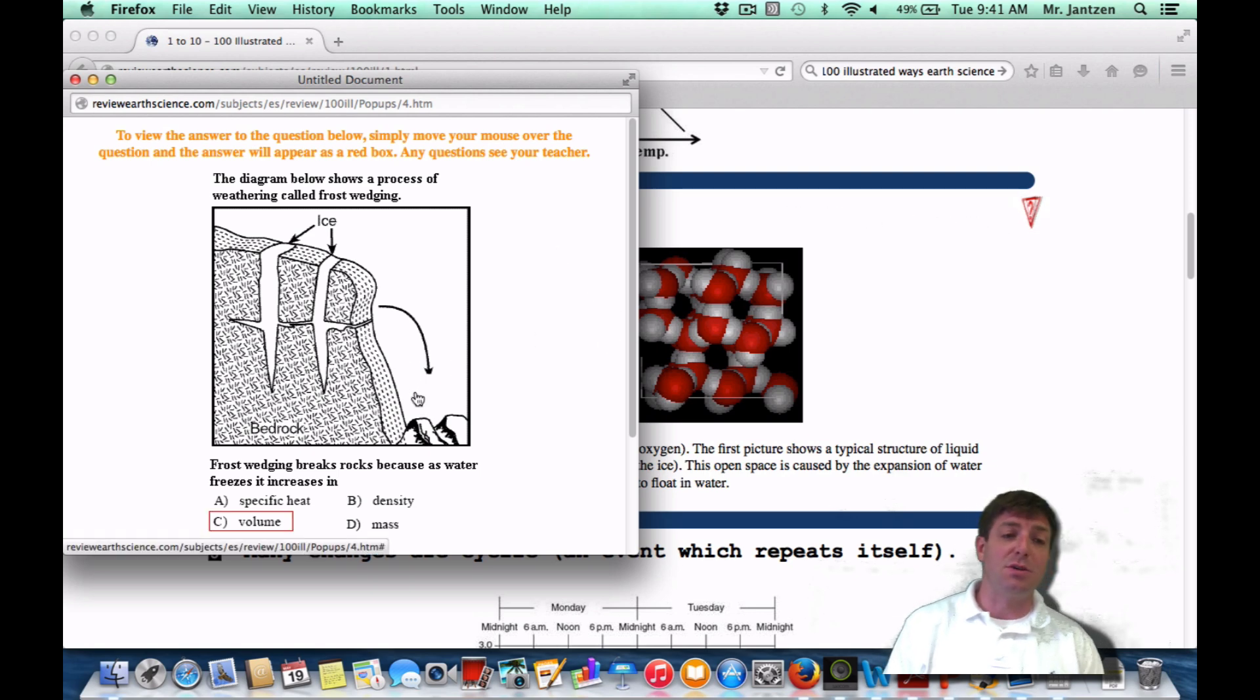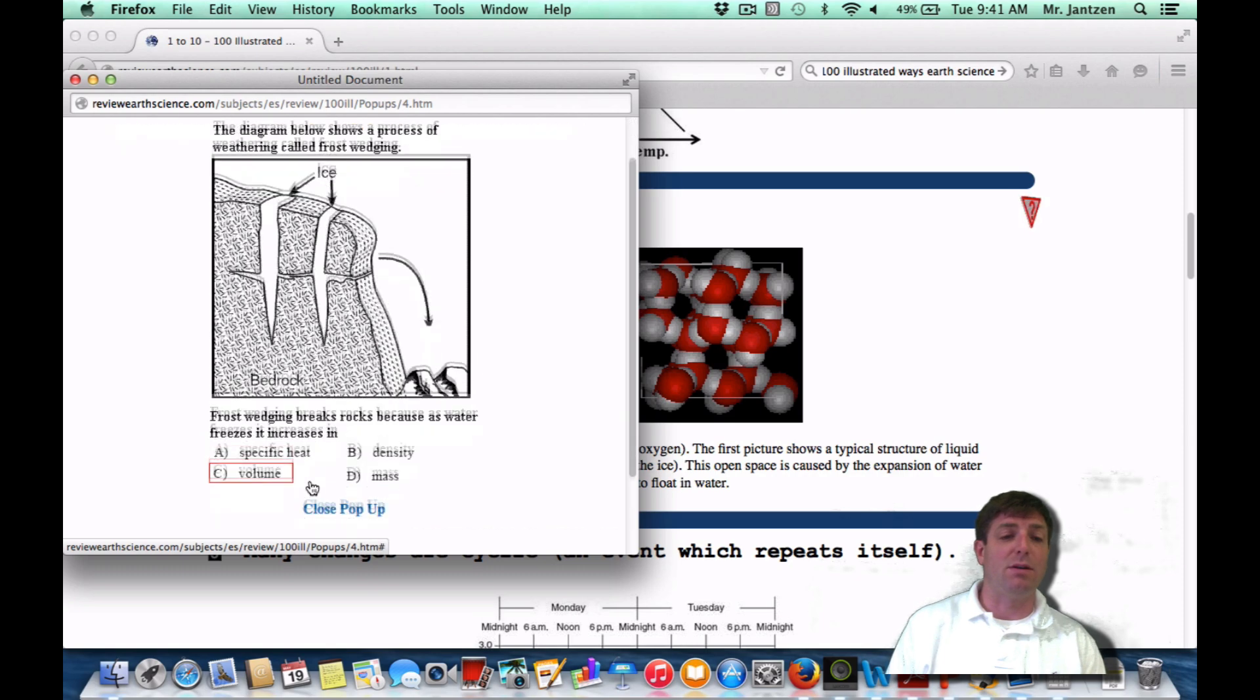So it's actually going to be a little less dense in the solid phase. That's why ice floats. If you were to see this as a Regents question, the diagram below shows the process of weathering called frost wedging. Frost wedging breaks the rocks because as water freezes, it increases in what? Well, if it freezes, that means it's taking up more space. So it's going to increase in volume or choice C.